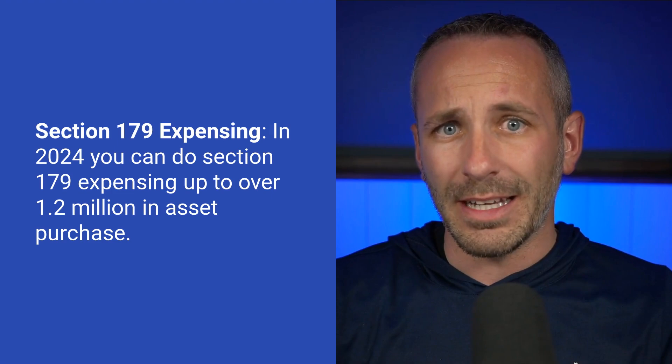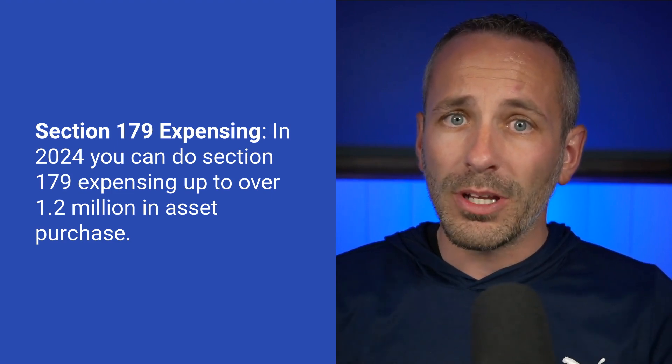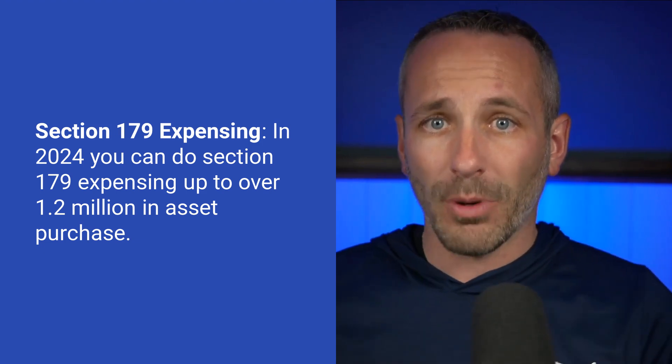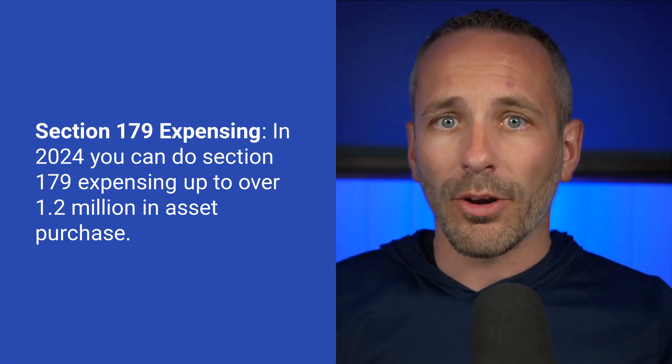So if you buy a hundred thousand dollar piece of equipment and choose bonus depreciation, you can depreciate 60 percent — sixty thousand dollars — all in year one in 2024. In 2025 that drops to 40 percent, then 20 percent, then zero, unless something gets extended. The third option is Section 179 expensing, which in 2024 allows expensing up to over 1.2 million dollars in asset purchases.